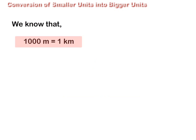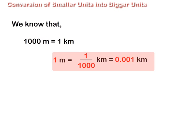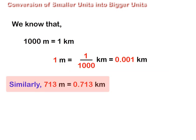1000 m is equal to 1 km. Therefore, 1 m is equal to 1 upon 1000 km, which is equal to 0.001 km. Similarly, 713 m is equal to 0.713 km.